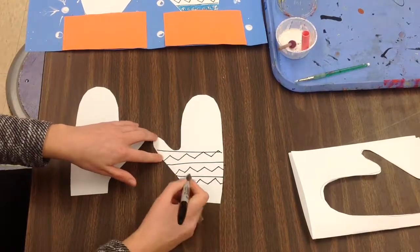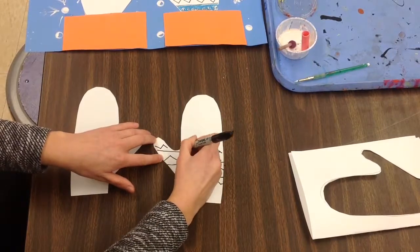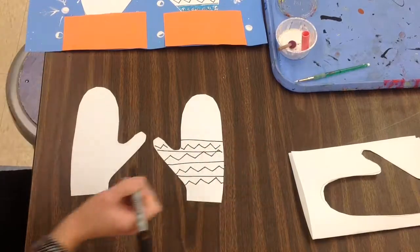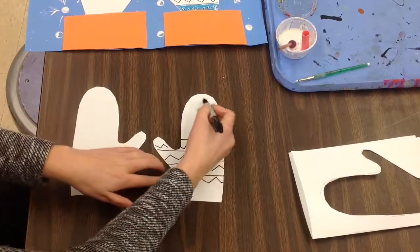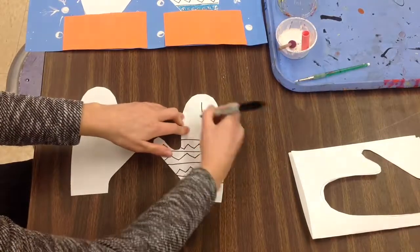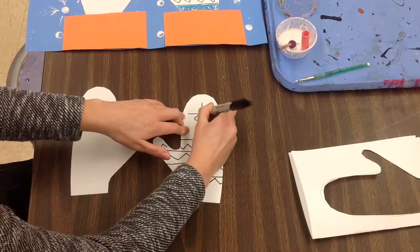So, my pattern is going zigzag line, straight line, zigzag line, straight line, zigzag line. What comes next? Straight line. I think my dream mittens would have another shape up here. Maybe even a snowflake. These are your dream mittens. What are they going to look like?